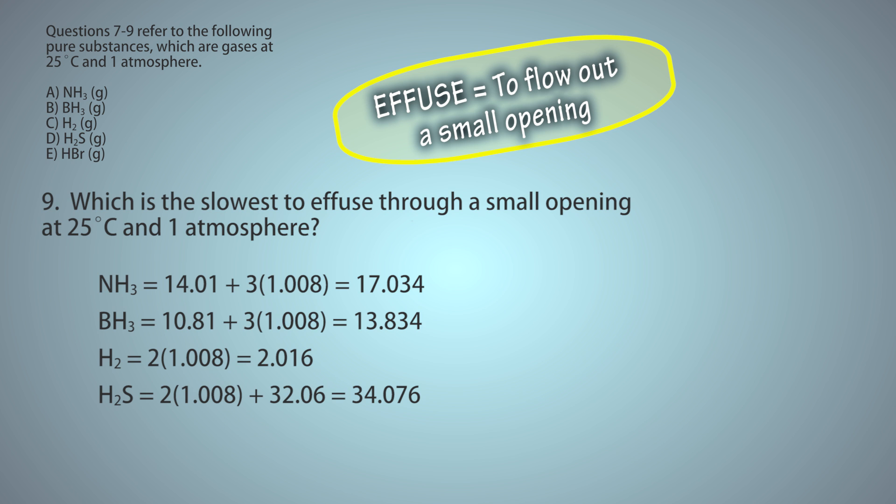H2S equals 2 times 1.008 plus 32.06 equals 34.076.